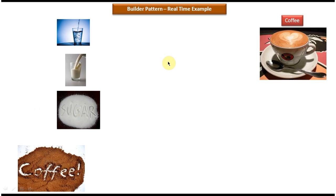So I have to mix all those things and prepare the coffee. Here, coffee is a complex object and the small components are simple objects. So using these simple objects, I can prepare the coffee.